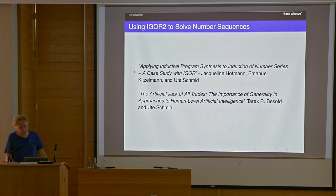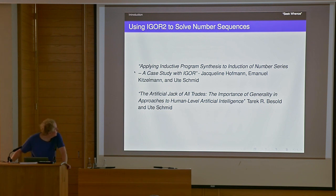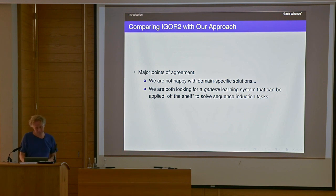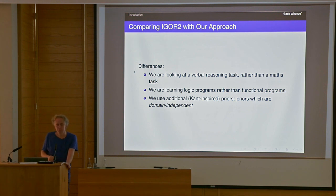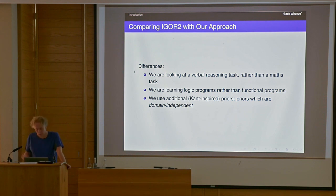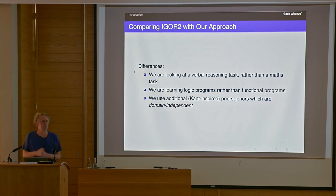A couple of other people tried to do similar things, including Uta Schmitz and others using a program synthesis system called iGoal, applying it to number series induction problems. What's similar is we're both looking for general purpose solutions rather than focusing on a specific domain. The crucial difference is we're injecting a lot of extra priors to do with forcing it to interpret the world in terms of objects changing over time according to rules which it has to induce — these extra Kant-inspired priors are what enables it to work in this domain. This is one of the main advantages of ILP systems: if you have some theory you want to impose, you can inject it directly into the ILP system in a way that is not easy to do with neural methods.